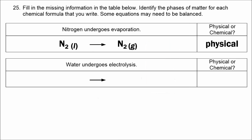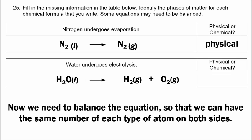Starting with liquid water on the left, we have O2 and H2 on the right. We need to balance the equation so that we have the same number of each type of atom on both sides. Since there are two oxygens on the right, we need two oxygens on the left, so we put a coefficient of 2 in front of the water. That gives us four hydrogens on the left, so we put a 2 in front of the H2. Now we have four hydrogens on the right and the equation is balanced. This is a chemical change because the chemical identity of the water is being changed.